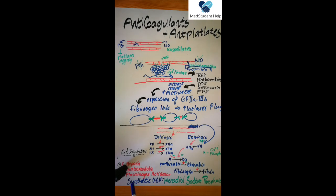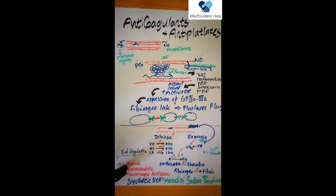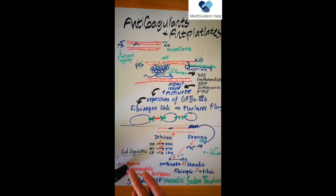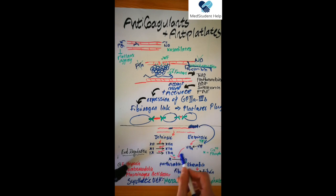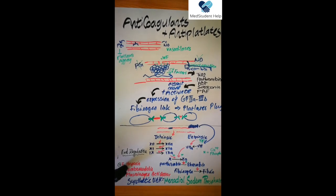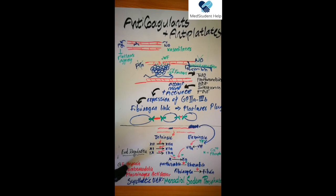In some cases we have a problem with the coagulation cascade, which can be genetic or acquired. Genetically, you have heard of hemophilia: hemophilia A is the absence of factor 8, hemophilia B is the absence of factor 9, and hemophilia C is the absence of factor 11. If any of these required coagulation factors is missing, the patient will have a problem stopping bleeding and may bleed to death without help.